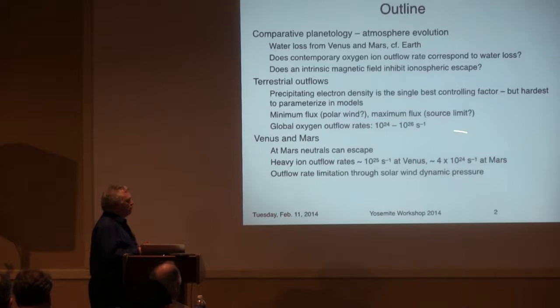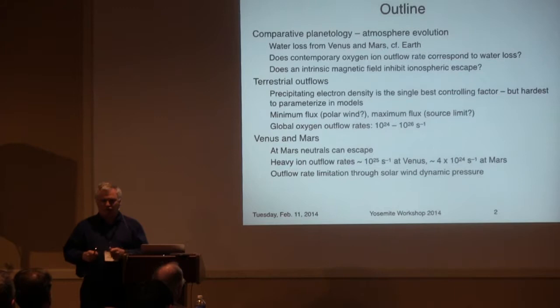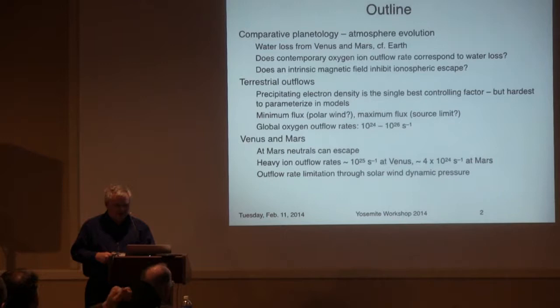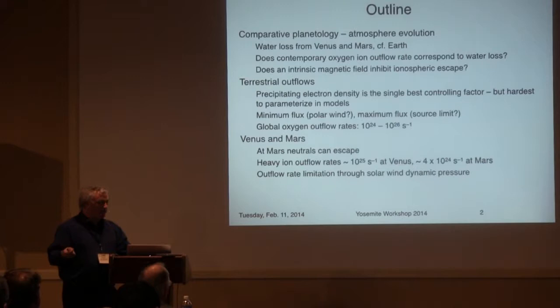This makes us wonder how did the atmospheres evolve? If we're going to keep citing these as water loss rates, why is the Earth wet and Venus and Mars dry? Because these contemporary rates are about the same. I'll also give an argument that says why in unmagnetized planets you can give a back-of-the-envelope calculation restricting the amount of outflow by the amount of solar wind momentum flux coming in.